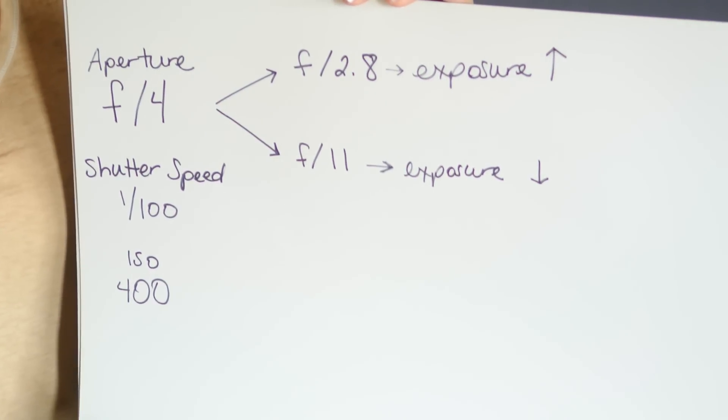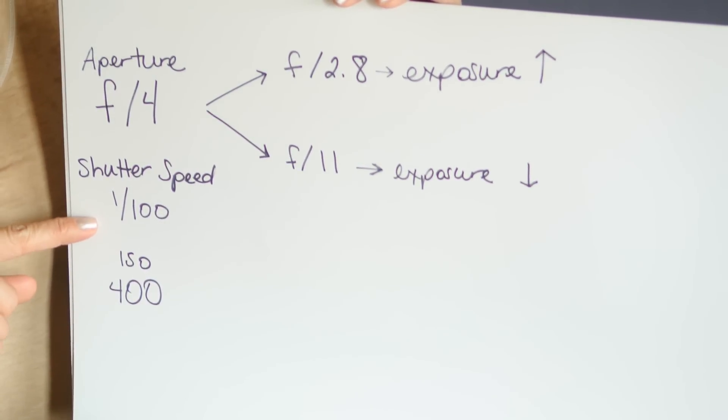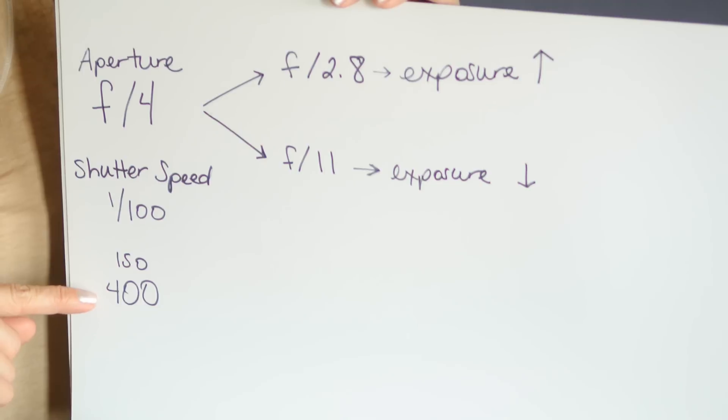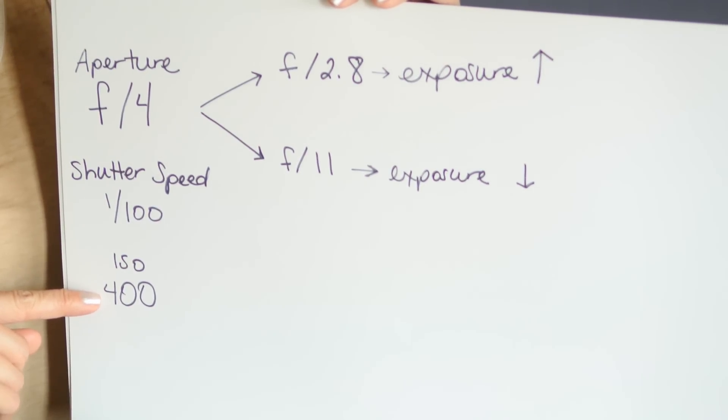Let's talk about a situation. These are the camera settings: aperture of f4, shutter speed of 1/100, and ISO sensitivity of 400. Let me show you how changing each of those items would affect exposure, which is simply the amount of light being let into the camera. So here's our scenario: aperture of f4, shutter speed of 1/100, and ISO sensitivity of 400.